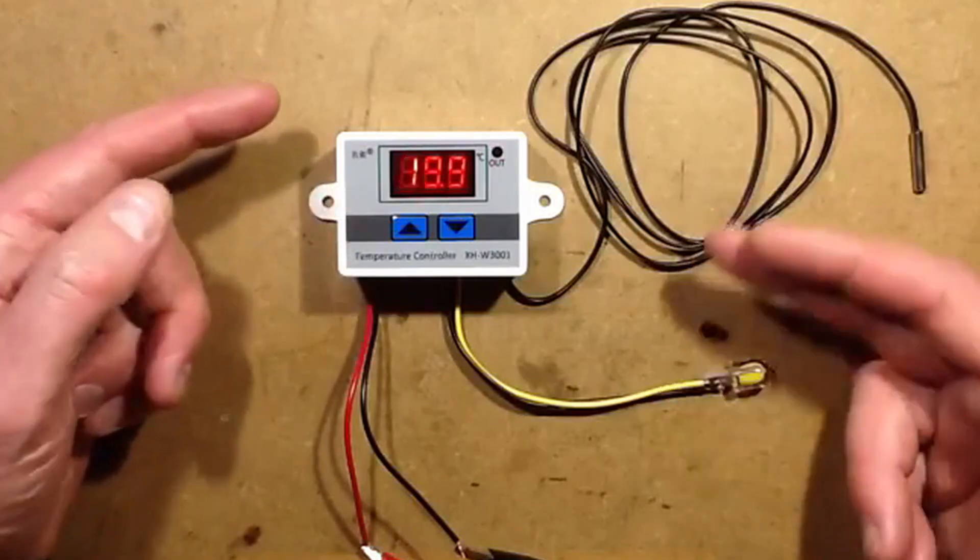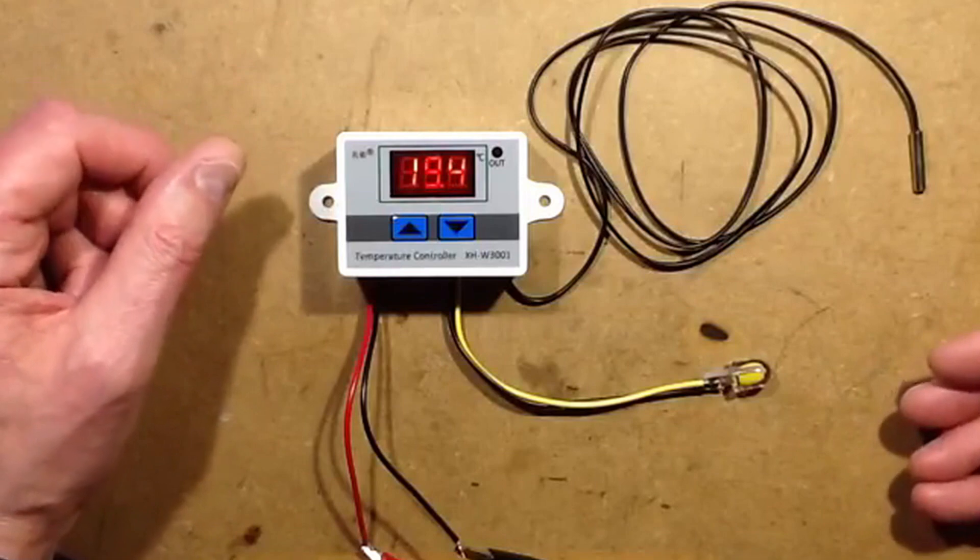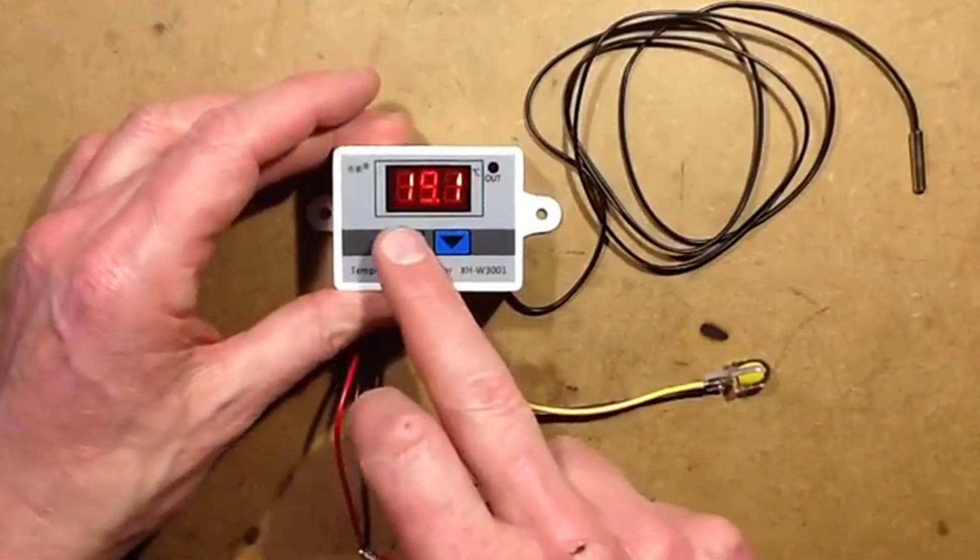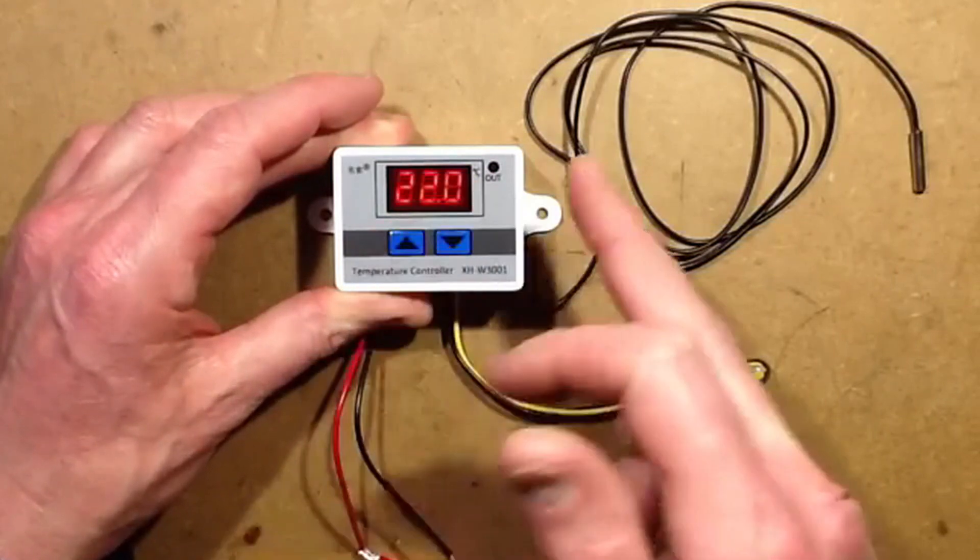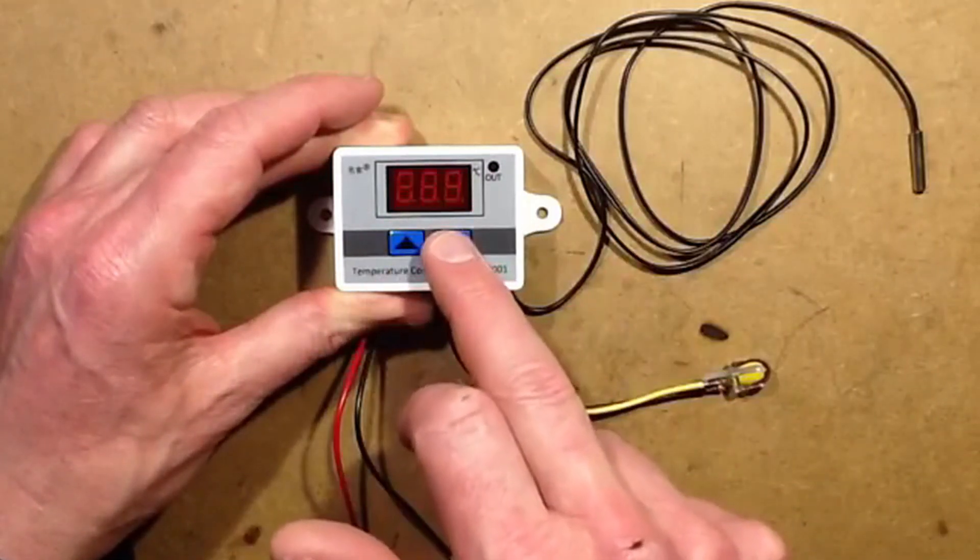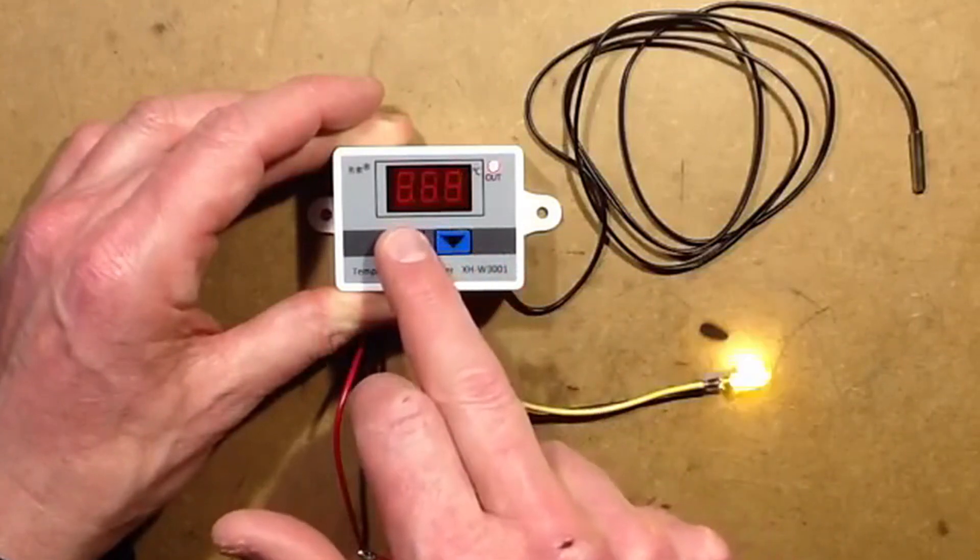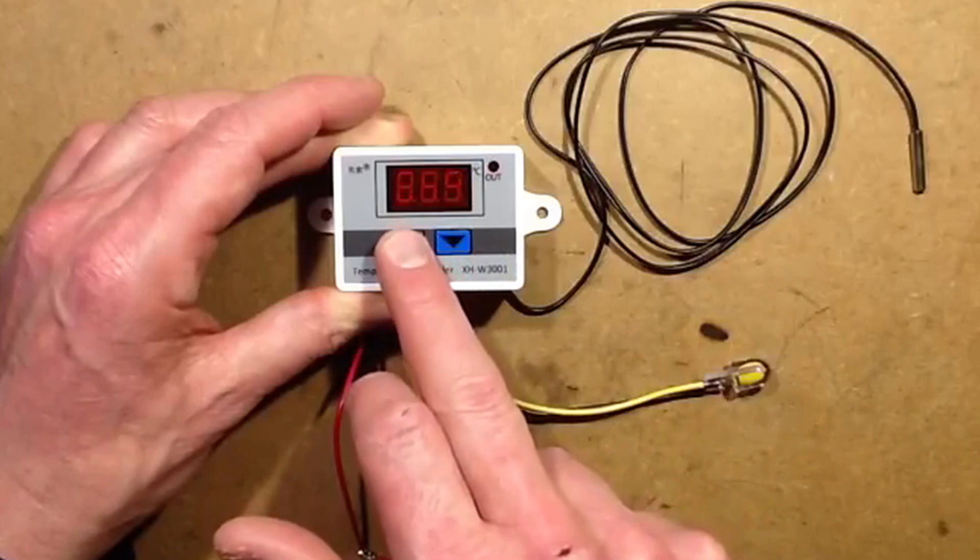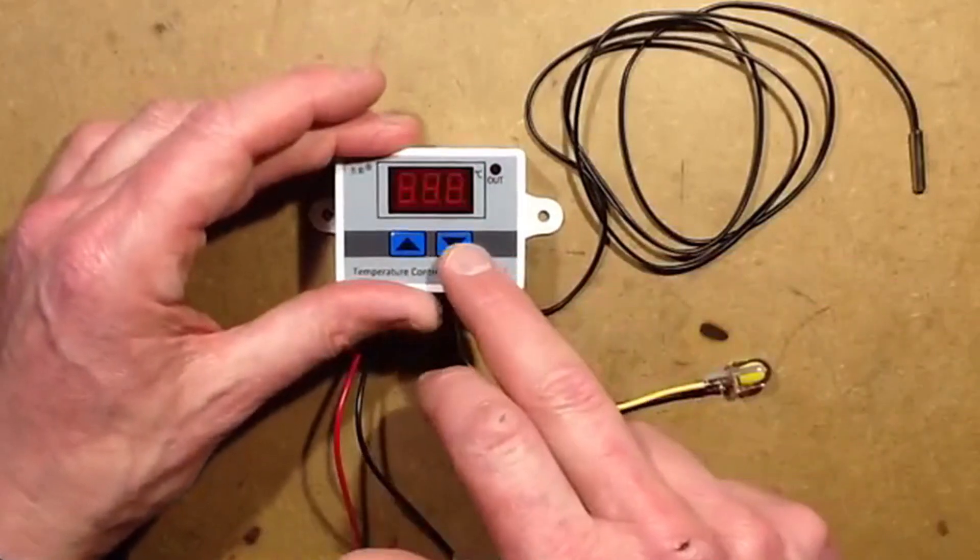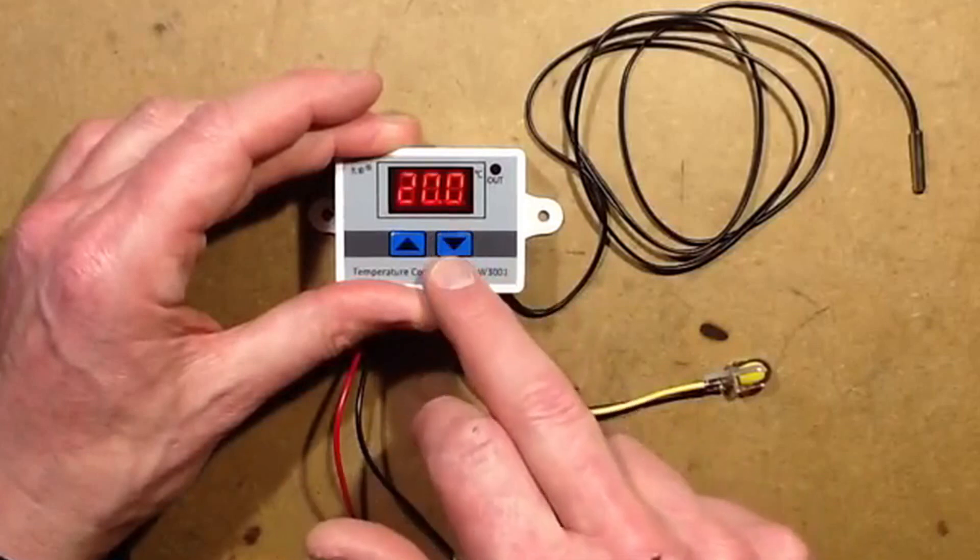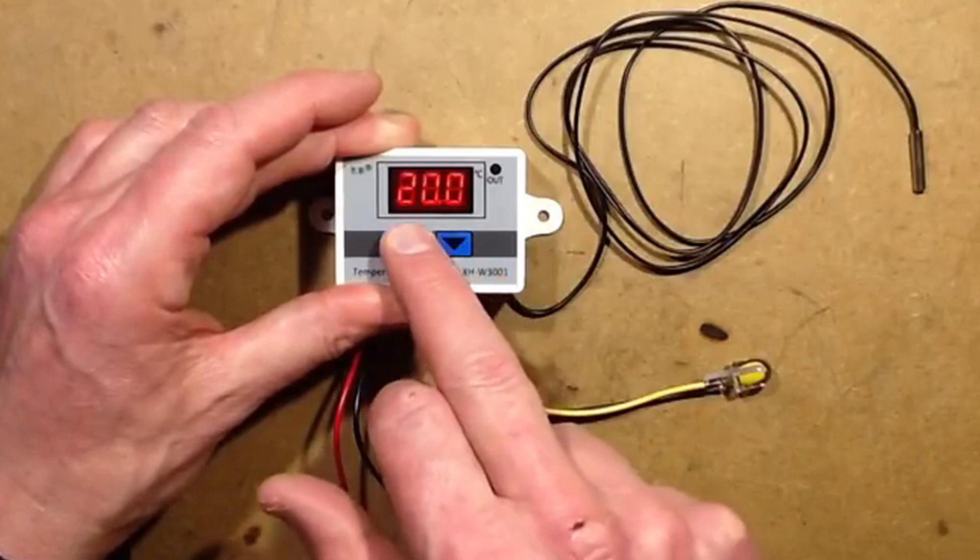Now supposing you wanted to make it heat instead of cool. All you do is select that one and say you wanted to come on at 20, and then you wanted it to go off, wait till it stops flashing, at 22. Put it into blinky mode.